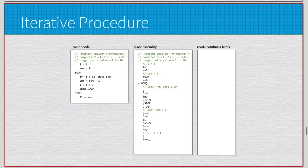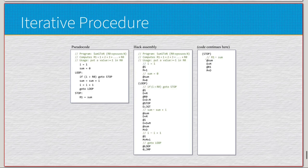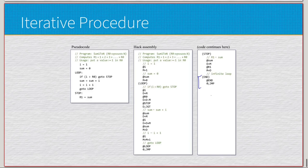Then we increment i with an in-place memory increment: @i; M equals M plus 1. Then 'go to loop' is an unconditional jump back to loop. Finally, we have the label 'stop', followed by 'R1 = sum': we do @sum; D equals M to get the sum value, then @R1; M equals D to store it in R1. We finish with our infinite loop to ensure we don't execute anything beyond what we intended.